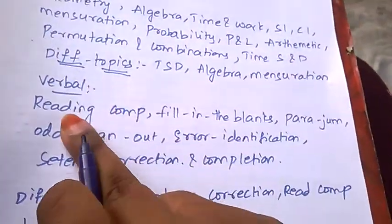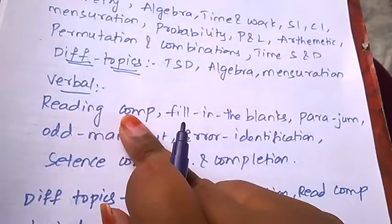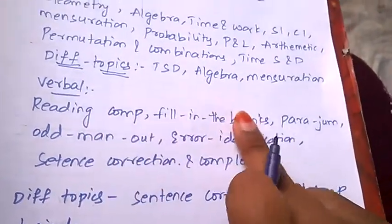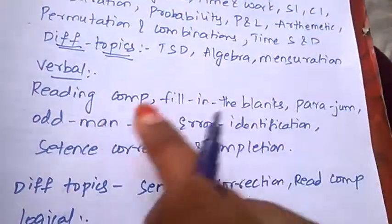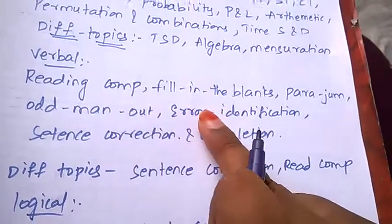Now let's see about verbal. Coming to verbal, the important topics are reading comprehension, fill in the blanks, para jumbles, odd man out, error identification, sentence correction, and completion.